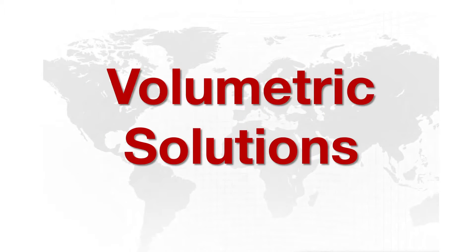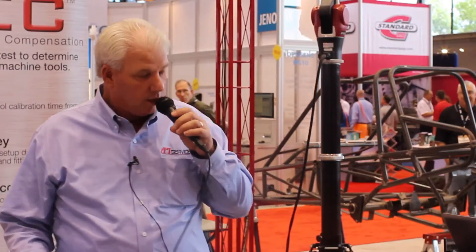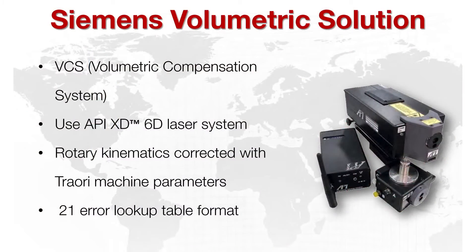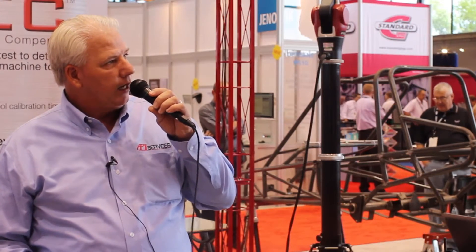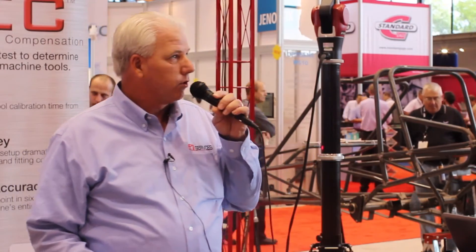The first volumetric calibration solution we support is the Siemens volumetric solution, the BCS. This solution utilizes our XD laser, which is the only laser on the market capable of mapping all six errors on an axis simultaneously. We also develop a 21-error lookup table format utilizing all the errors from that XD system, and we support the kinematic rotary corrections in the Siemens controller.